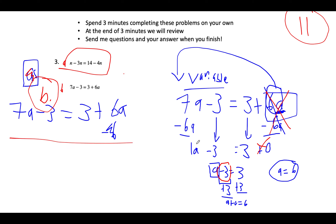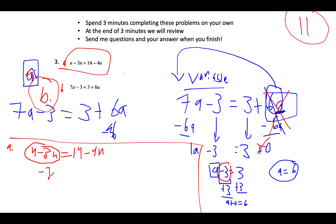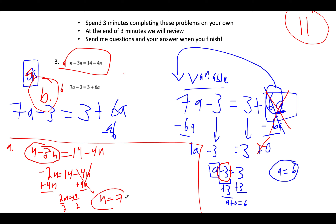For problem 3a, we have n minus 3n equals 14 minus 4n. The first thing to do is combine like terms: n minus 3n gives us negative 2n equals 14 minus 4n. We then add 4n to both sides, giving us 2n equals 14. We divide both sides by 2 and get n equals 7. We're using inverse operations to eliminate variables — normally we eliminate constants, but this time we're getting all variables to one side.